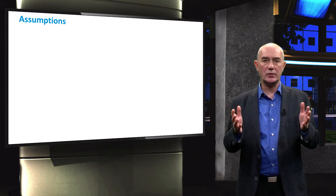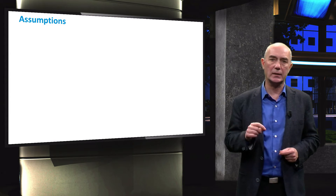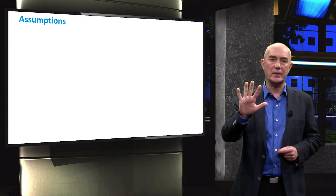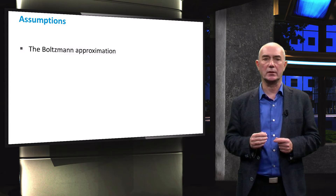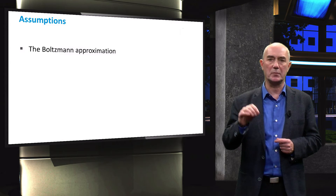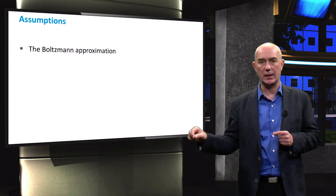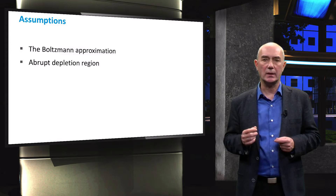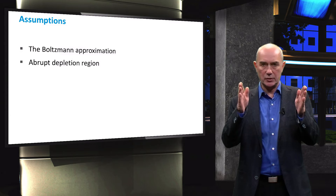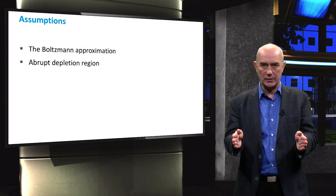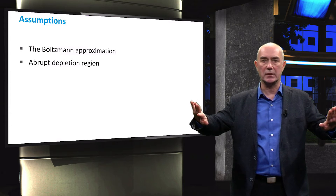To simplify the derivation of the current density-voltage relationship for a P-N junction diode in the dark, we will make five assumptions. The first assumption is the Boltzmann approximation of the Fermi-Dirac distribution function, which we will discuss in detail in the next slide. The second assumption is the abrupt depletion layer, meaning the depletion region has abrupt edges and the semiconductor is charge neutral outside of the depletion region.